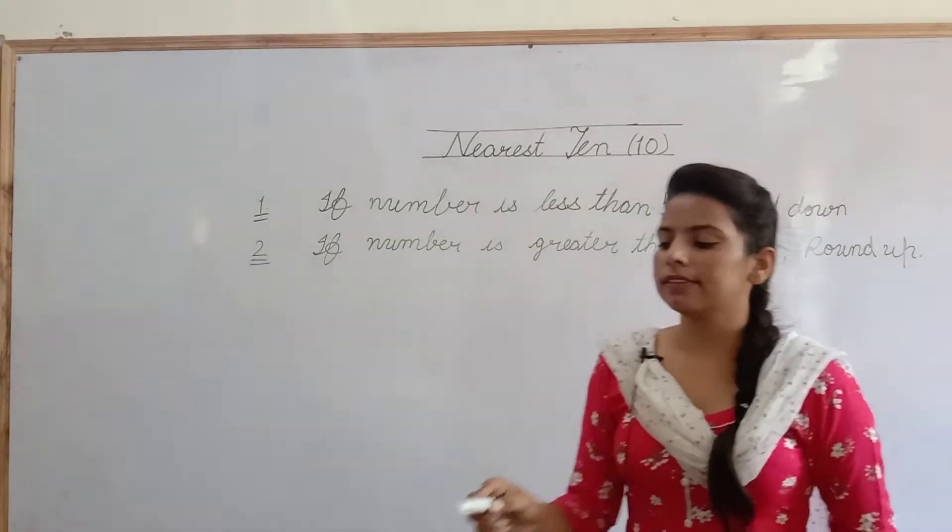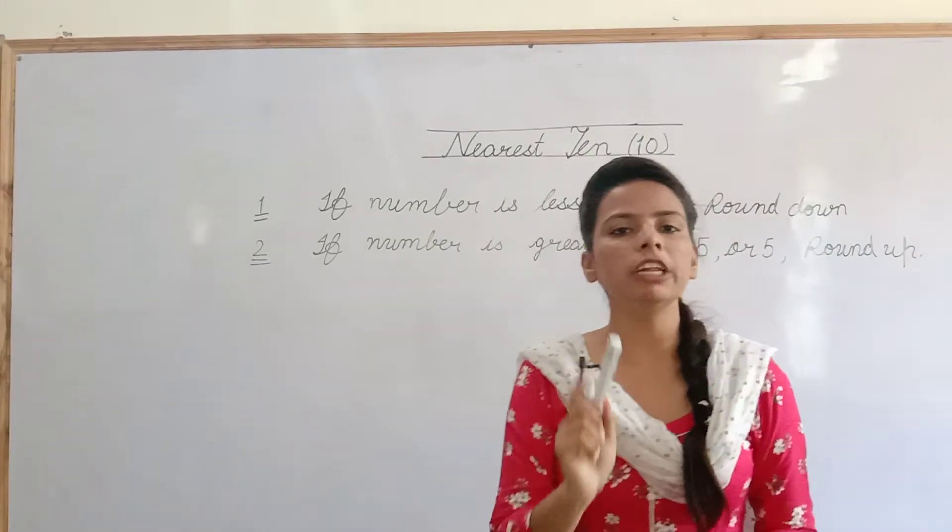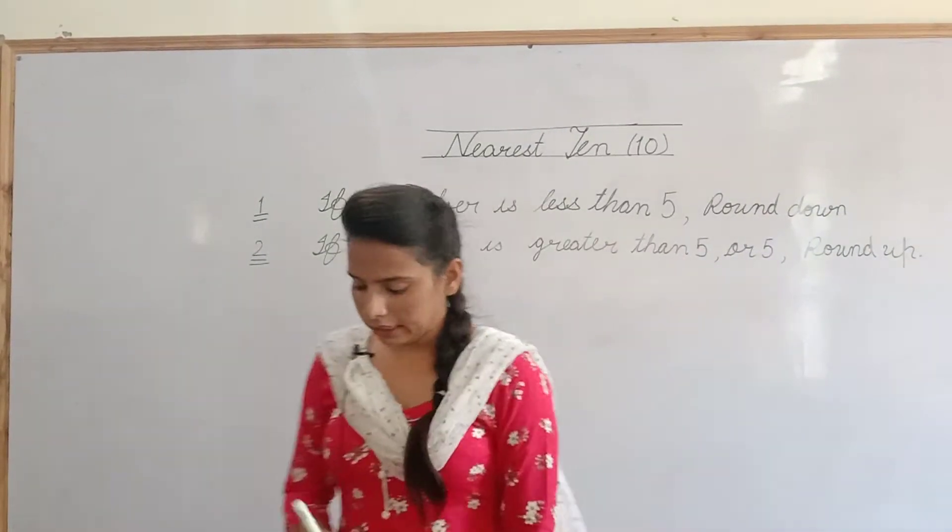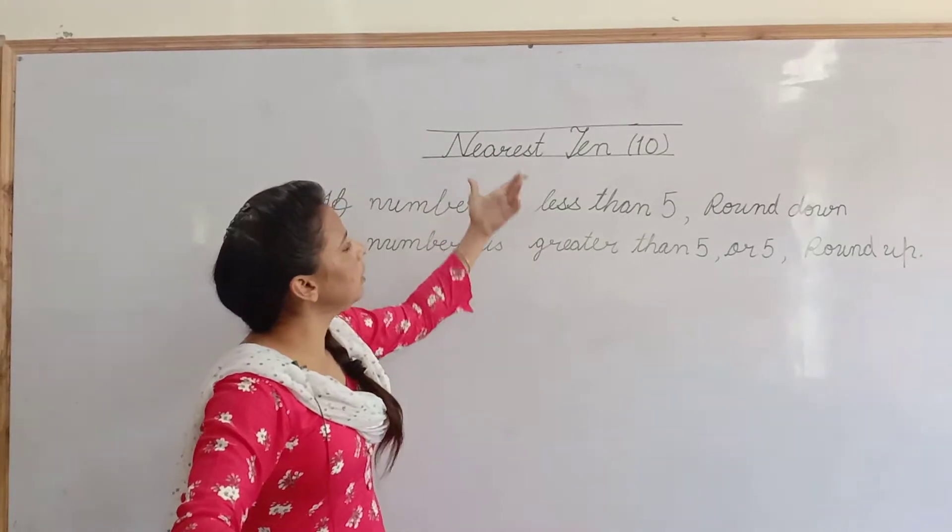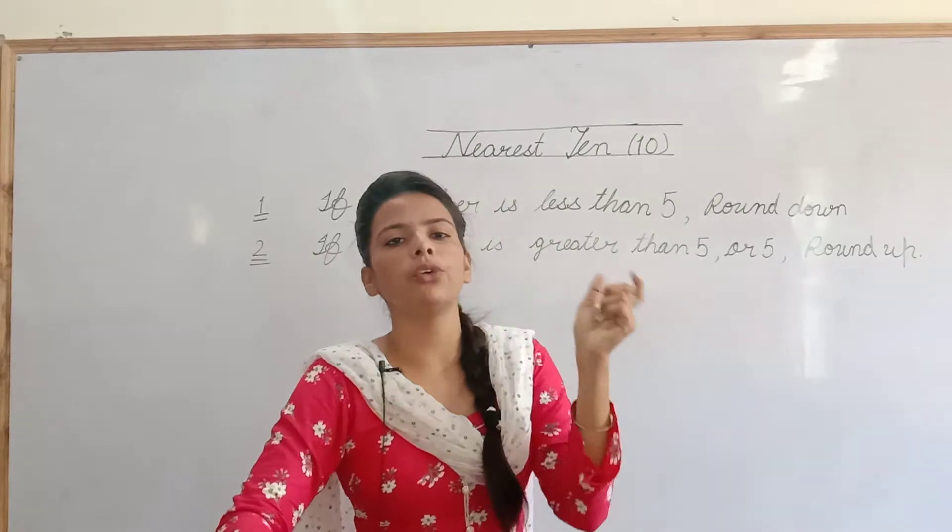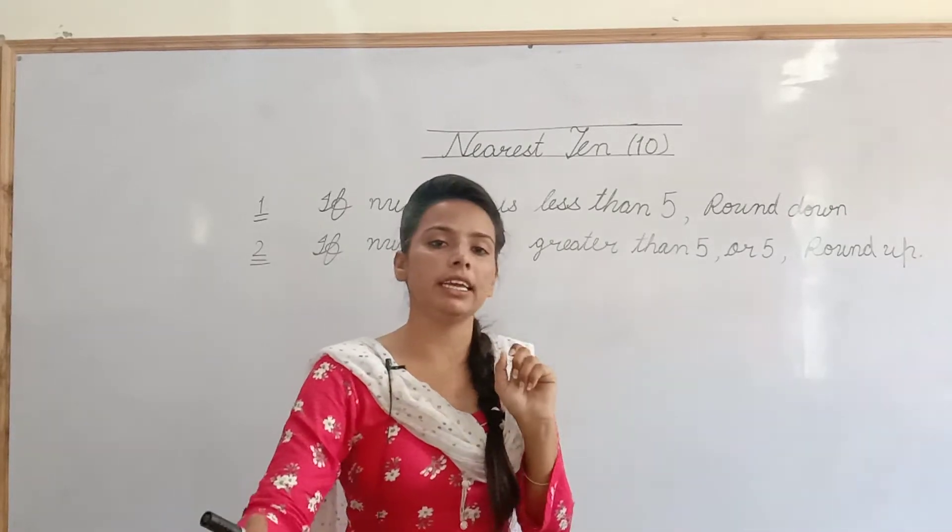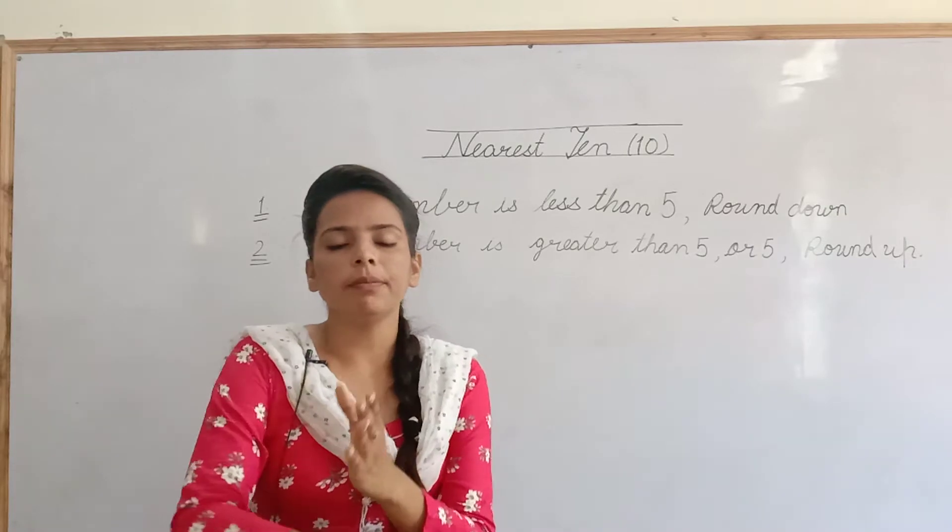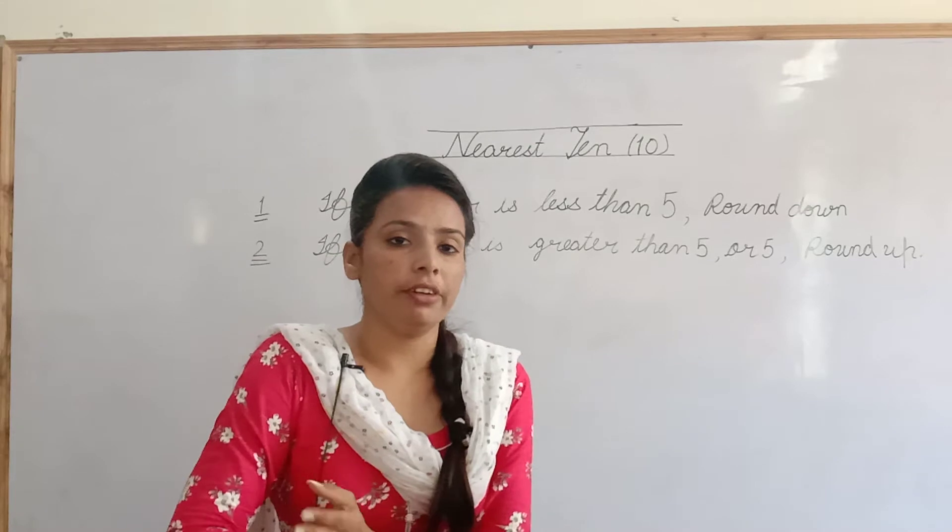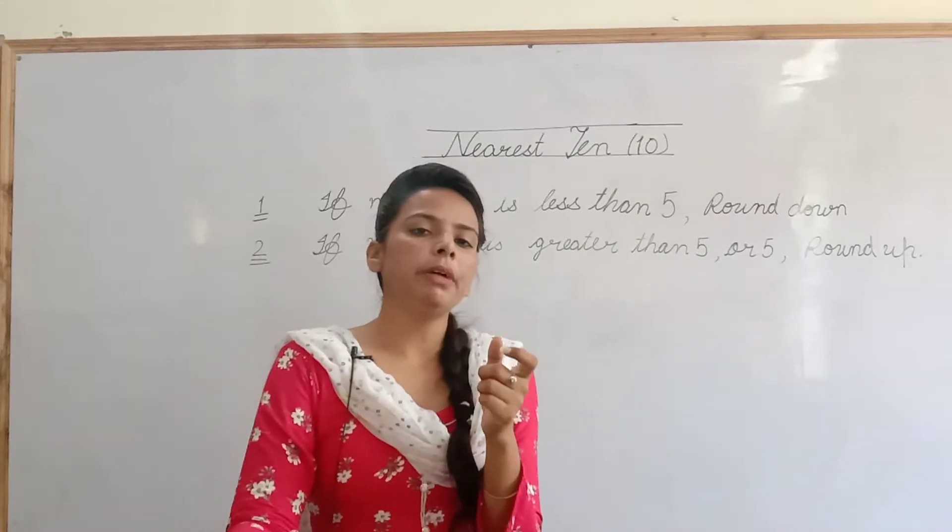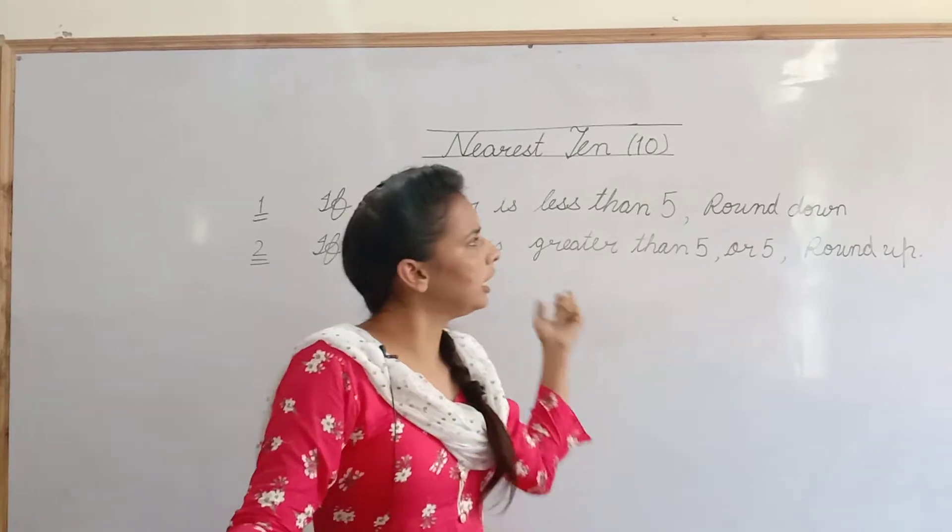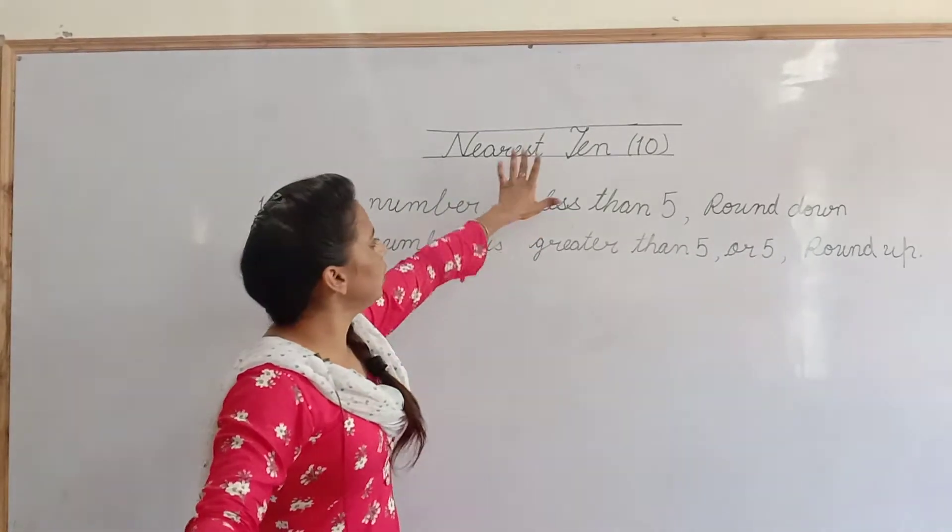Today I am doing exercise 1G and only one topic which is nearest 10. Means if we have a number given, then we will round it and see which number is nearest. To estimate means to make an approximately calculation. Means, کوئی بھی number ہمیں دیا گیا ہے, ہمیں اس کا estimate کیسے لگانا ہے? Approximately calculation کر کے کہ یہ اس number کے nearest ہے. Today we will do nearest 10.